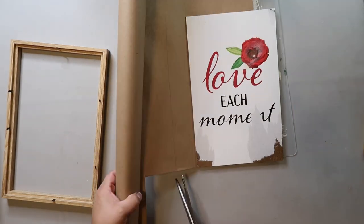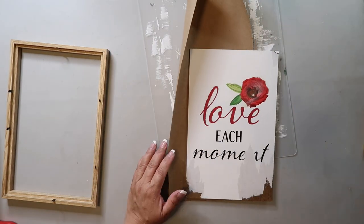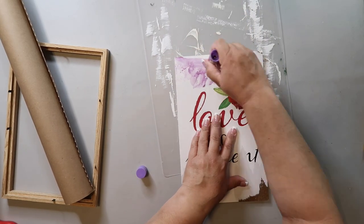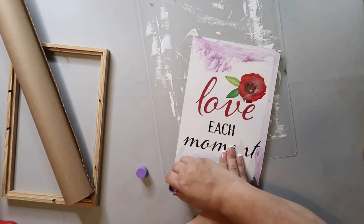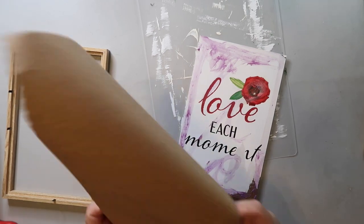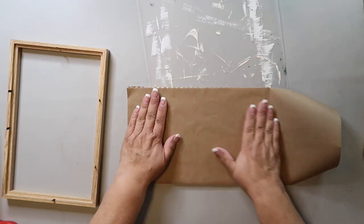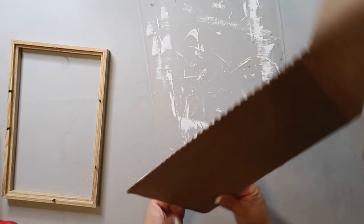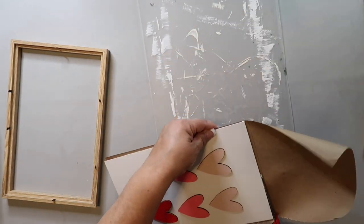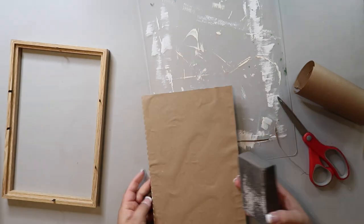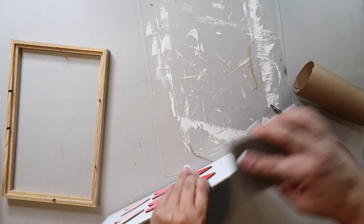This is the back of the sign which used to be the front. I like to finish out my projects when I can, so I'm going to cover this with brown craft paper from Dollar Tree. I just measure it, cut it out, and use a glue stick to glue it down. I then trim the sides and pop it back into the frame.